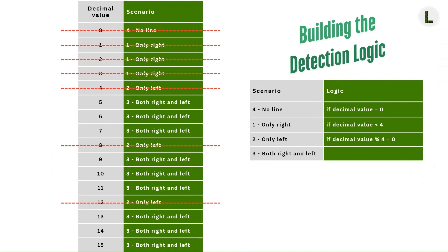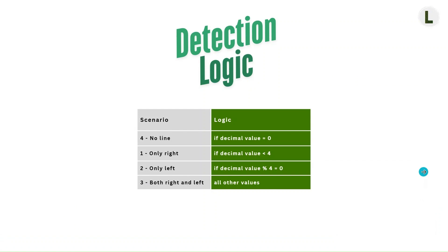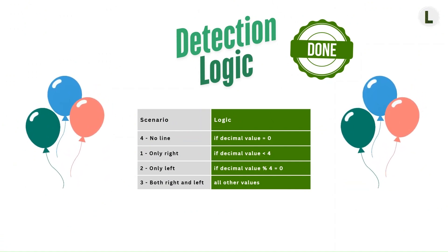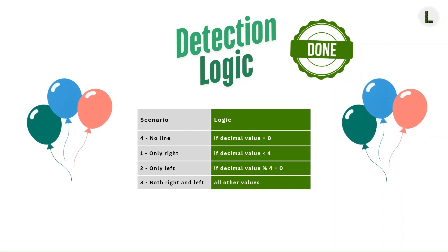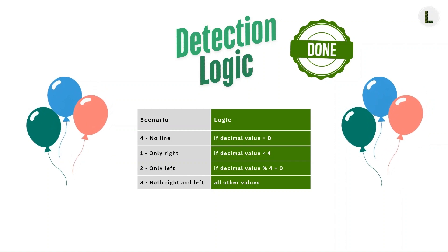We are at the last scenario for our detection logic. Since everything that remains is all just scenario three, we can simply say that other than the three scenarios already detected above, all other decimal values will be mapped to scenario three. We now have our final detection logic in this table. If you need a quick break, now would be a good time — take a five minute walk or grab a healthy snack or refill your water. If you're doing this with a friend, take some time to reflect and discuss. Once you're back, we'll continue with defining the reaction logic.